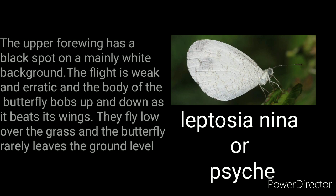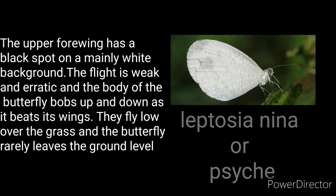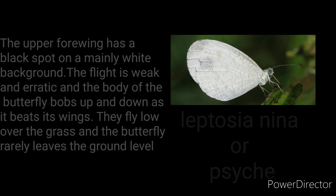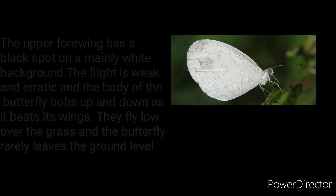The upper forewing has a black spot on a mainly white background. The flight is weak and erratic, and the body of the butterfly bobs up and down as it beats its wings. They fly low over the grass, and the butterfly rarely leaves ground level.